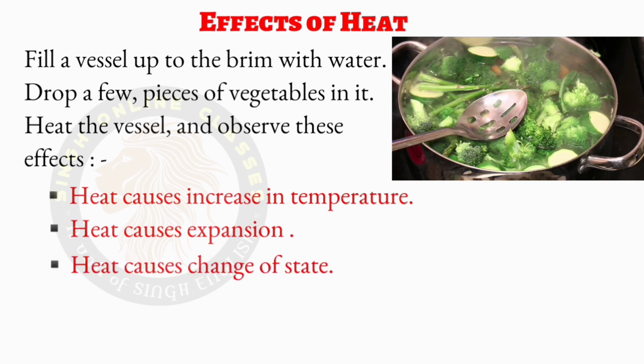Next, as the water boils, steam comes out — that is, water changes its state from liquid to vapor. Thus, heat causes a change in state. After the water has boiled for a few minutes, the vegetables become soft and their taste changes — the vegetables get cooked. Cooking of vegetables is a chemical change. Thus, heat causes chemical changes.